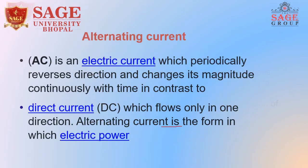What is the difference between AC and DC? Here we discuss the definitions of alternating current and direct current. Alternating current periodically reverses direction and changes its magnitude continuously with time — that is known as alternating current. Direct current flows only in one direction, and alternating current is the form in which electric power is delivered.